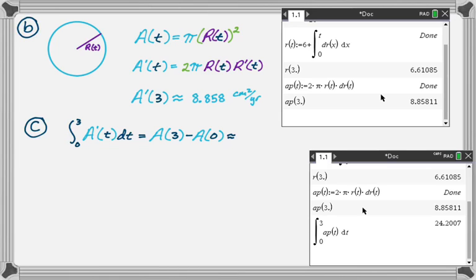Here's my calculator work. I get 24.201. The reason I wrote the fundamental theorem part there was that I think that can help you to interpret it. We're doing the difference between where we are at 3, the cross-sectional area at 3, and the cross-sectional area at 0.